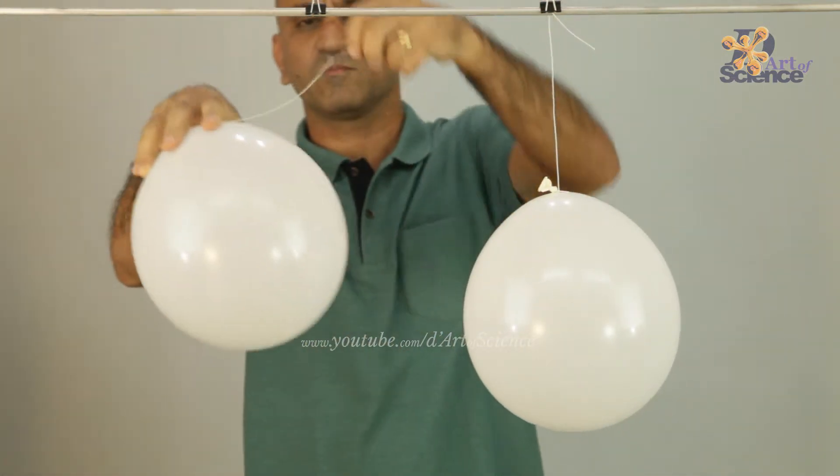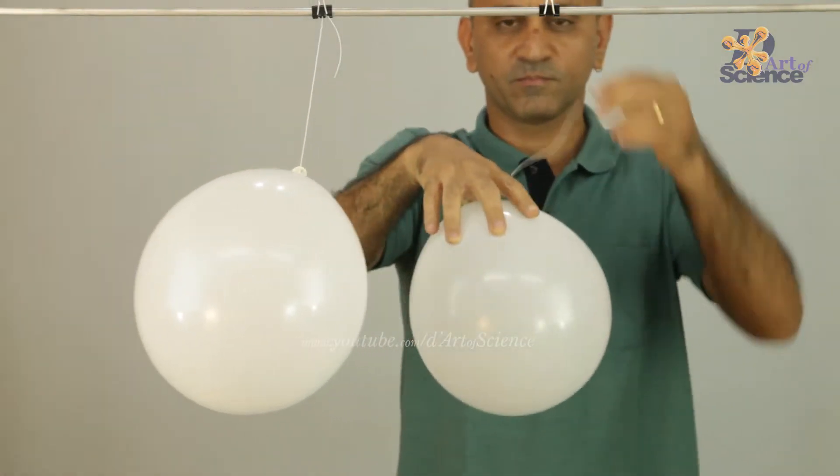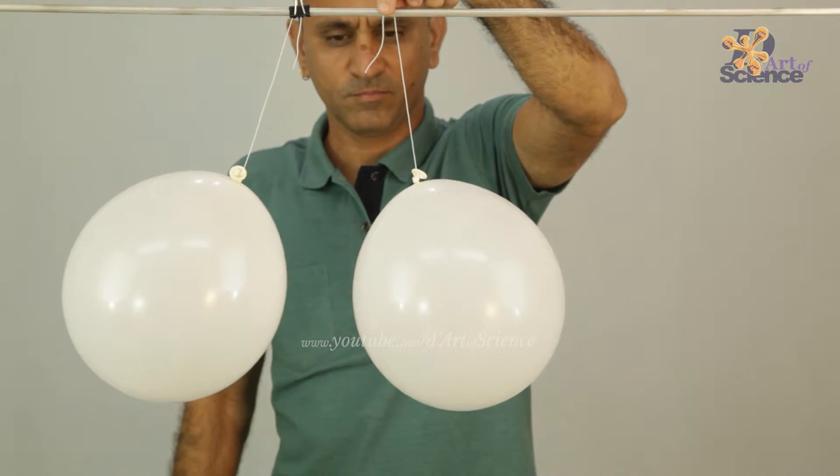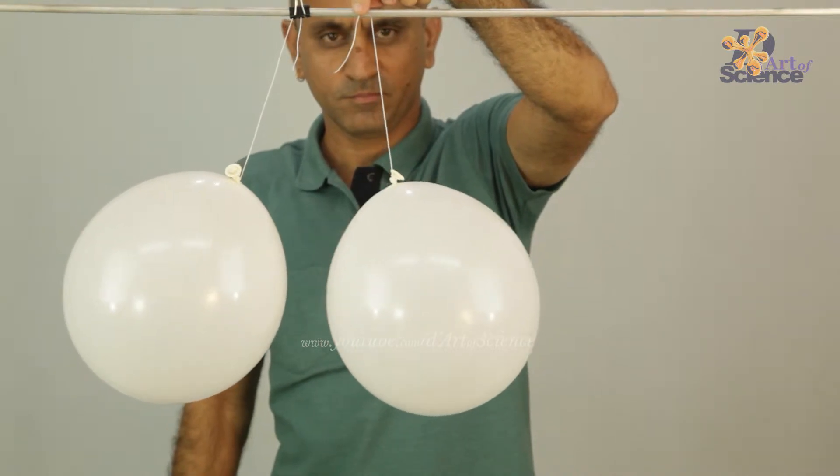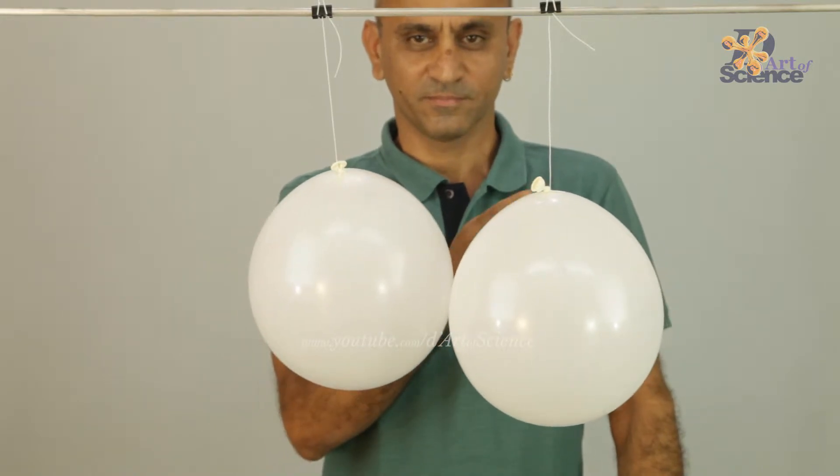And coming back to why the balloon was repelling the other balloon is because both were charged and therefore both were negative. If one was charged and the other was not, then both would get attracted to each other.